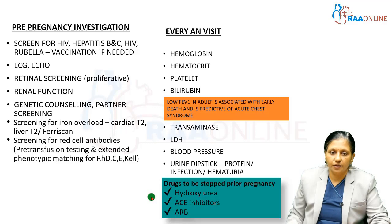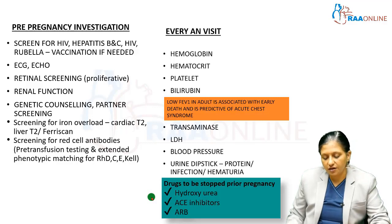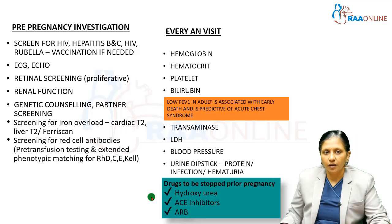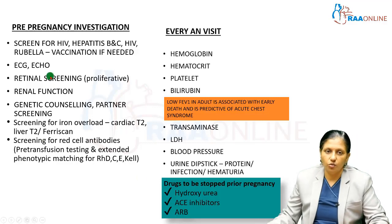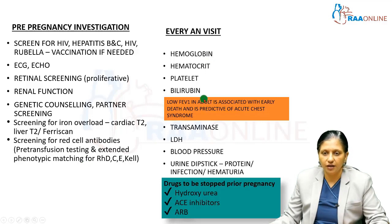Iron overload screening and red cell antibody screening for pre-transfusion testing, including extended phenotype matching for Rh D, C, E, and Kell antigens, are required because these patients receive multiple transfusions. After she becomes pregnant, monthly monitoring of hemoglobin, hematocrit, platelet count, and bilirubin should be done.